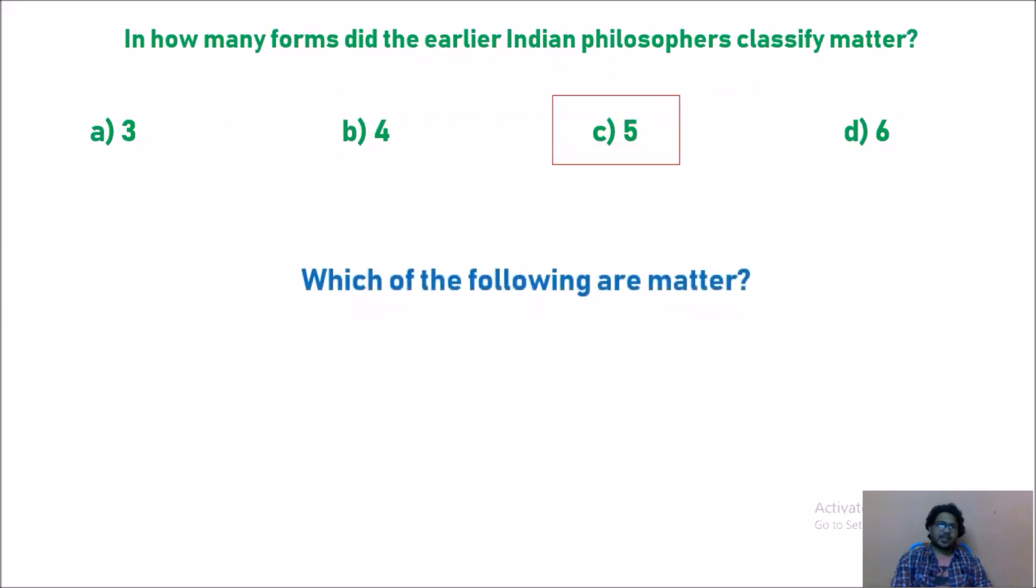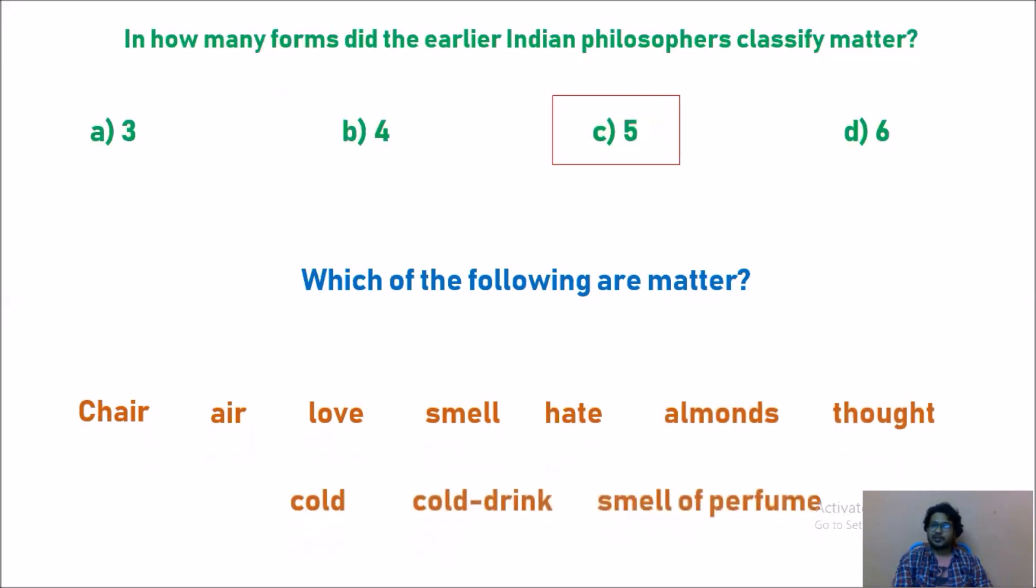Next let us see another question: which of the following are matter? I'll give you a few examples and you need to classify them into matter. You know what is meant by matter: matter is a substance which has mass and occupies space. Now let us see a few examples: chair, air, love, smell, hate, almonds, thought, cold, cold drink, smell of perfume.